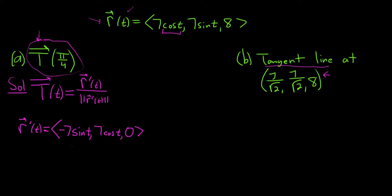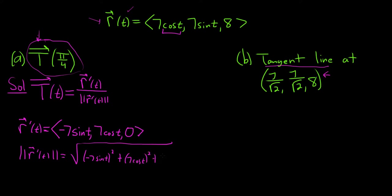Let's go ahead and find the magnitude — I'm pretty sure it's going to be 7. The formula for the magnitude says you square each component. So squaring the first gives 49 sin²(t), squaring the second gives 49 cos²(t), and squaring 0 is just 0, so it goes away.